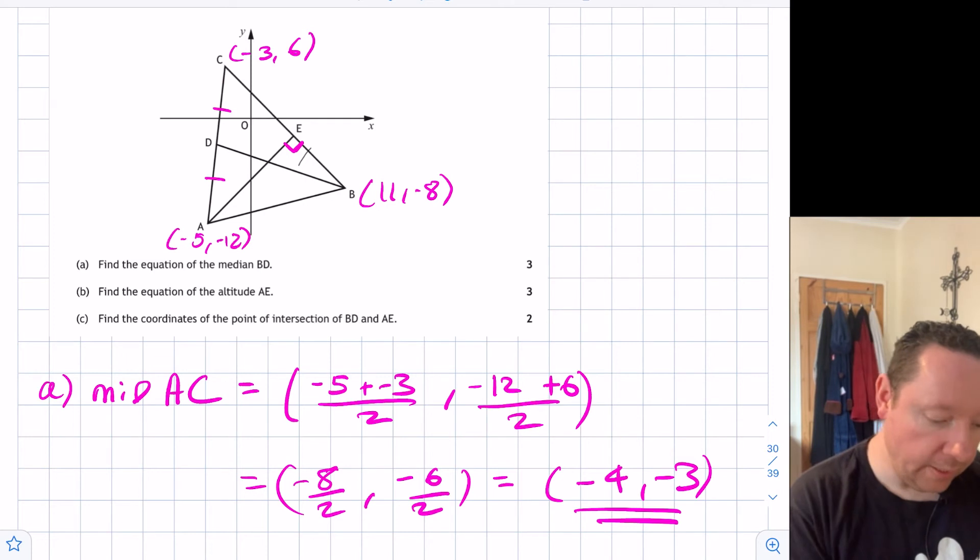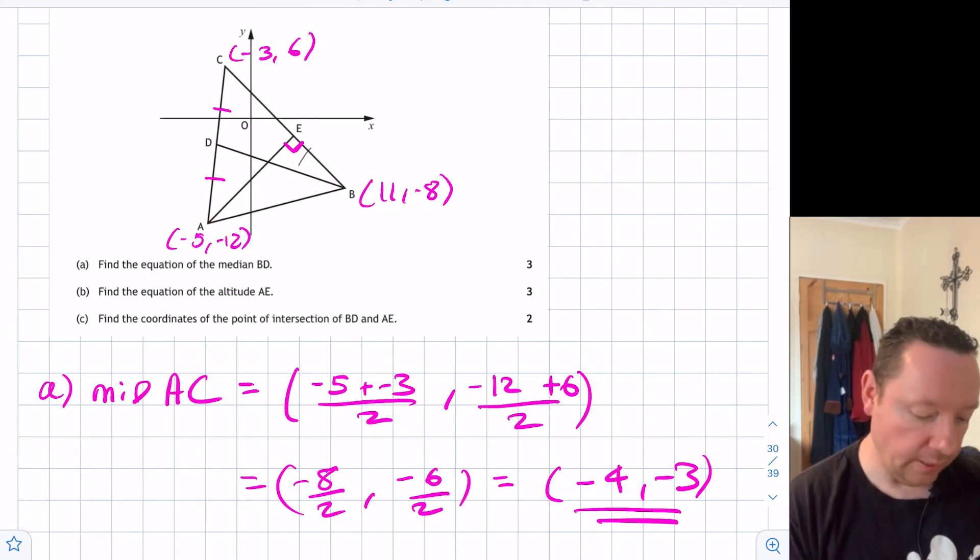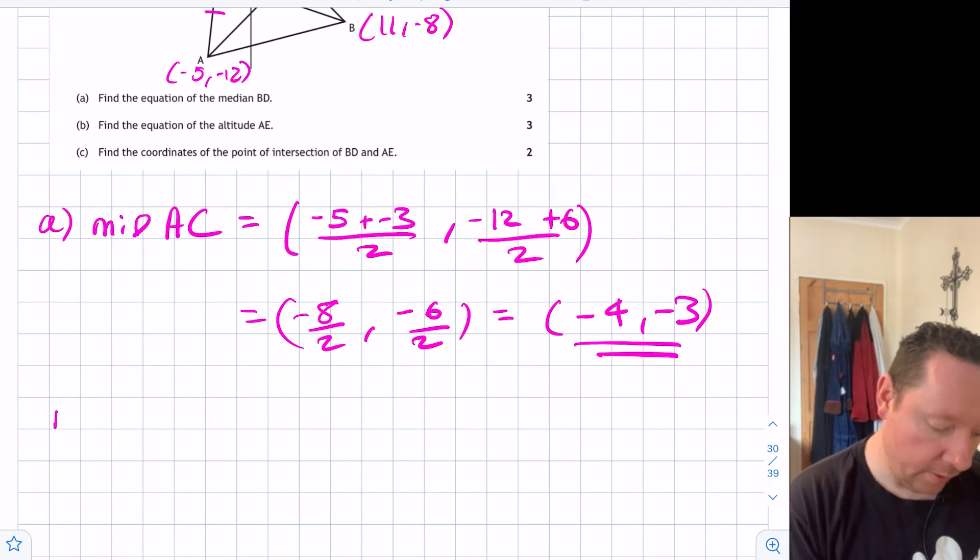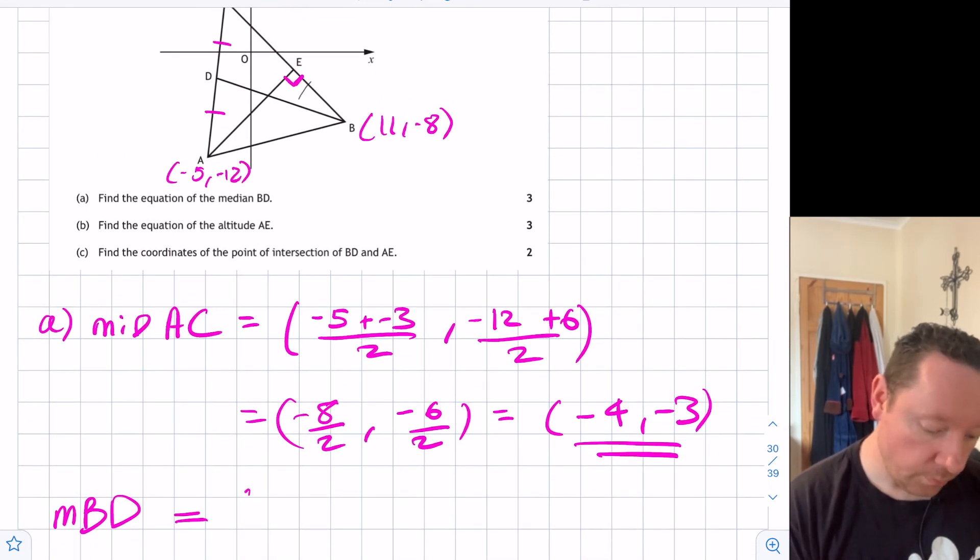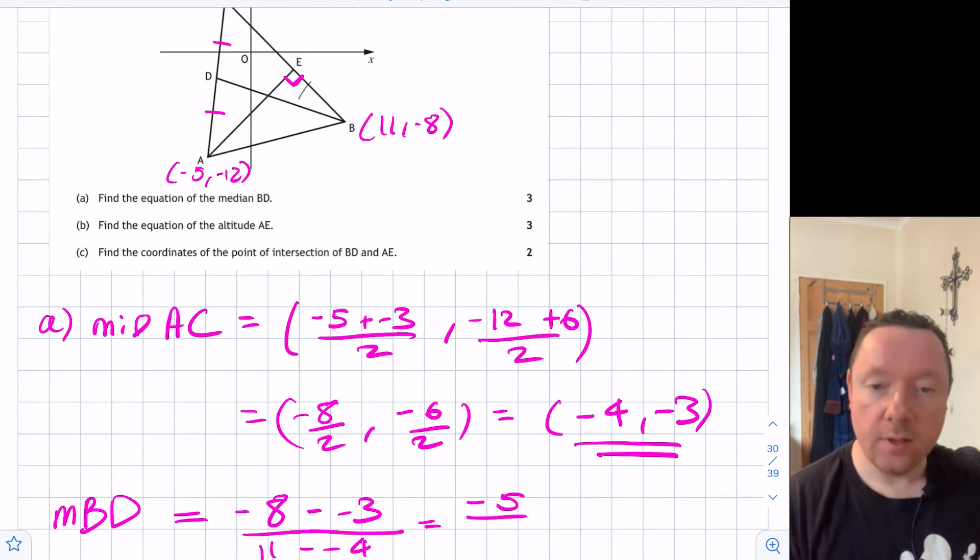We now need to work out the gradient of our median. Notice, a lot of people make this mistake: do not work out the gradient of this line when doing medians, it's not going to help us. We want the gradient of the line we're actually doing. We want the gradient of the other line when we're doing perpendicular. So it's not perpendicular, it's the gradient of BD. We want the gradient of B to D, D being our midpoint. Let's start with -8 minus -3 over 11 minus -4. -8 add 3 is -5, 11 add 4 is 15. Simplifying our fractions we get -1/3. We've now got our gradient.